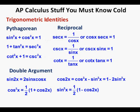Trigonometric identities. The Pythagorean identities are: sine²x plus cosine²x equals 1; 1 plus tan²x equals secant²x; and cotangent²x plus 1 equals cosecant²x. The reciprocal identities are: secant x equals 1 over cosine x; cosecant x equals 1 over sine x; and cotangent x equals 1 over tangent x. The double argument identities are: sine 2x equals 2 sine x cosine x; cosine 2x equals cosine²x minus sine²x equals 1 minus 2 sine²x; cosine²x equals ½(1 plus cosine 2x); and sine²x equals ½(1 minus cosine 2x).